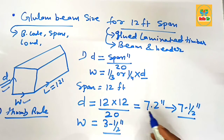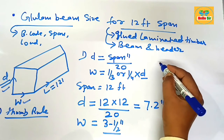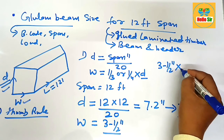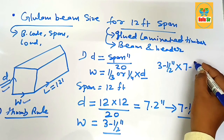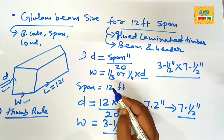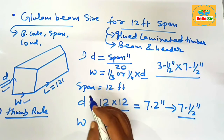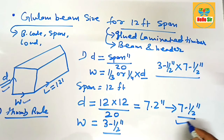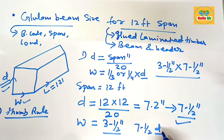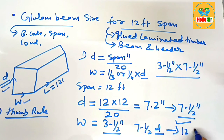So you need approximately 3.5 inches for the width section of the beam and 7.5 inches for the depth section of the beam. A 7.5-inch depth glulam beam is required to span 12 feet. Thank you.